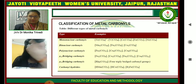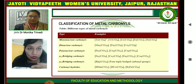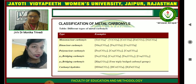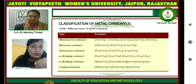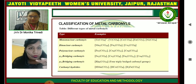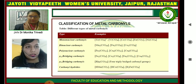The six categories are: mononuclear carbonyl, dinuclear carbonyl, polynuclear carbonyl, mu-2 bridging carbonyl, mu-3 bridging carbonyl — where mu-2 and mu-3 indicate the number of bridge bonds present — and carbonyl hydrides.